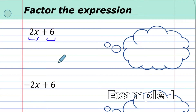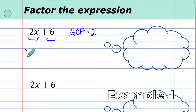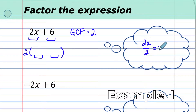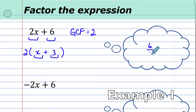We think about the greatest common factor of both terms — what number or expression can divide into both evenly. We know 2 can go into both. We write the 2 on the outside of the bracket, and inside we have two terms: 2x divided by 2 gives us x, and 6 divided by 2 gives us 3. We distribute to check: 2 times x is 2x, and 2 times 3 is 6. We got it right.